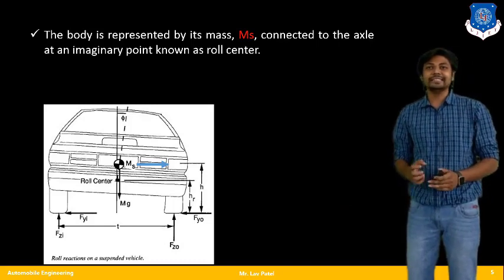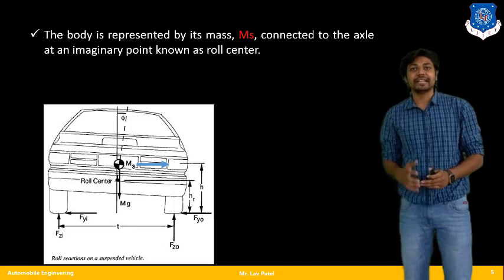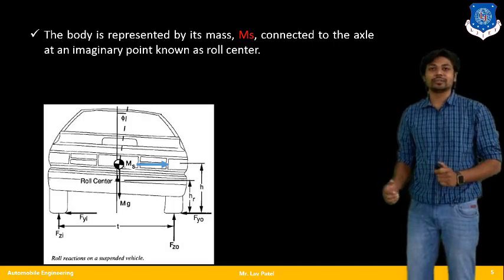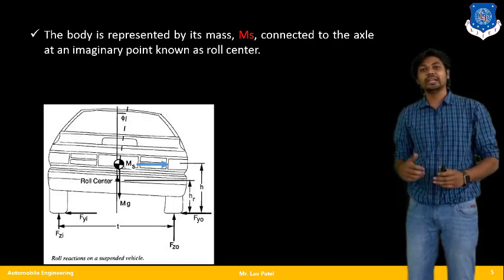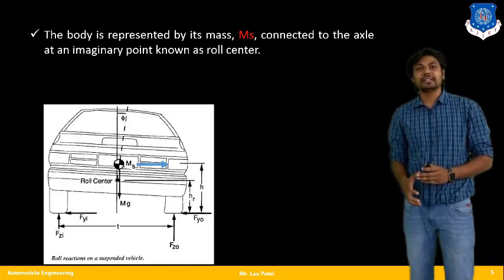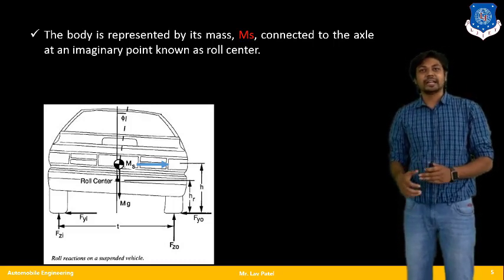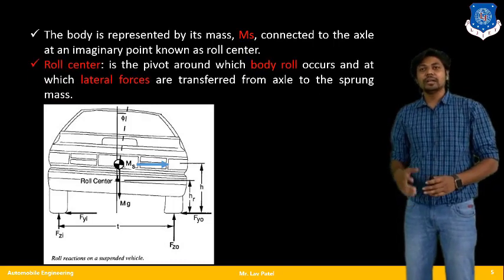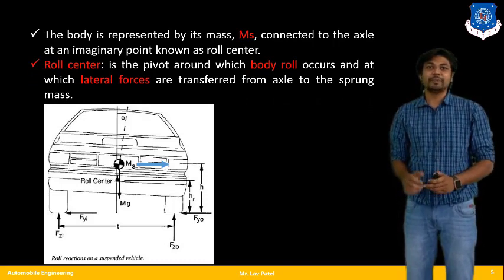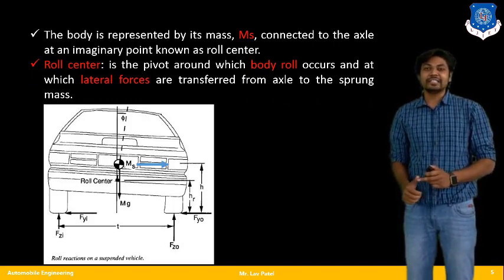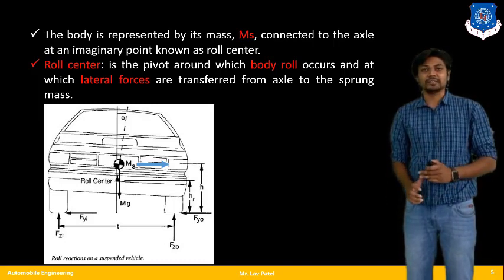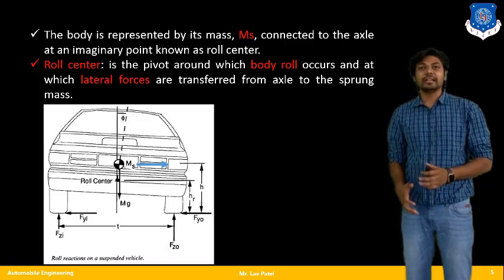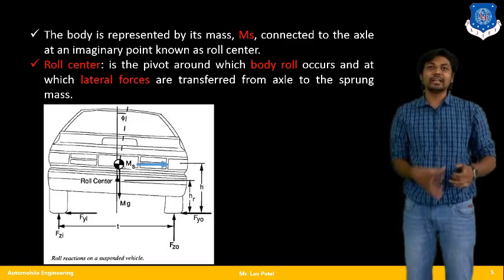The overall body, represented by the sprung mass m_s, is connected to the axle at an imaginary point known as the roll centre. We have discussed how the roll centre is calculated. The roll centre is the pivot around which body roll occurs and at which lateral forces are transferred from the axle to the sprung mass.